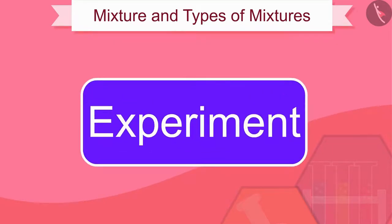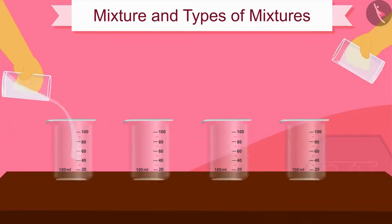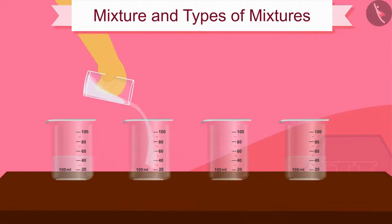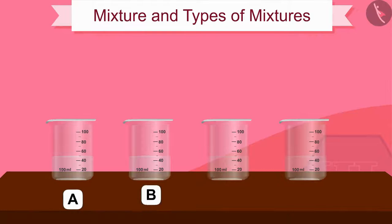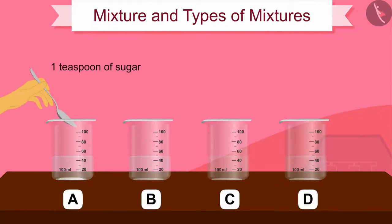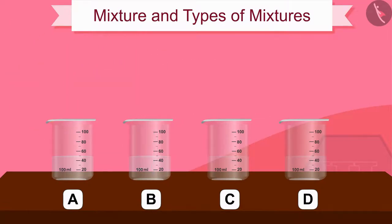Gather three of your friends for this experiment. Take 50 ml of water in four beakers and name these four beakers A, B, C, and D. Dissolve one teaspoon of sugar in beaker A, and ask your friend to dissolve three teaspoons of sugar in beaker B.